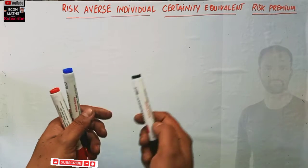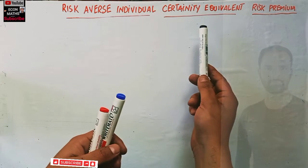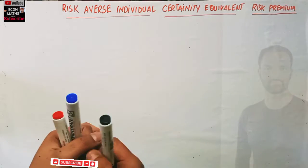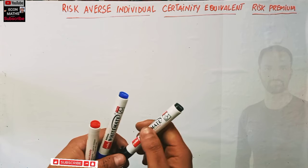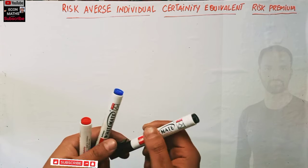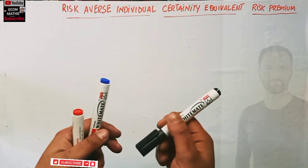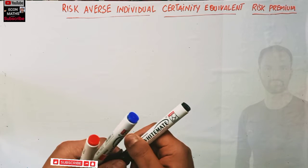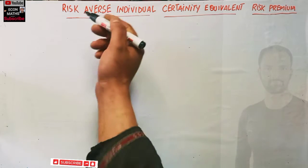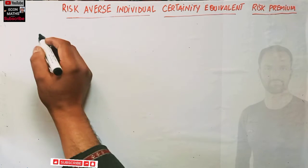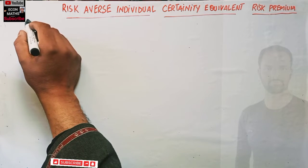In this video we will talk about certainty equivalent and risk premium for a risk averse individual. Let us have an example to understand this very well. Let us say we have an agent or an individual.